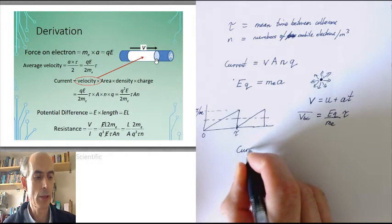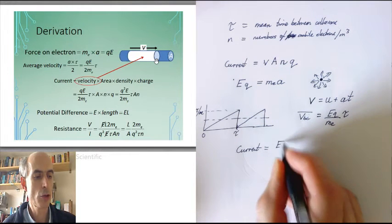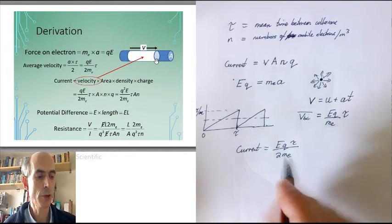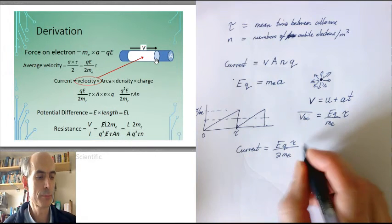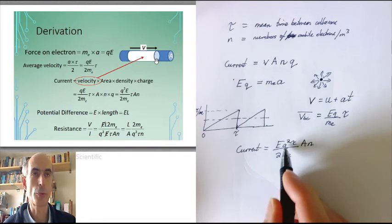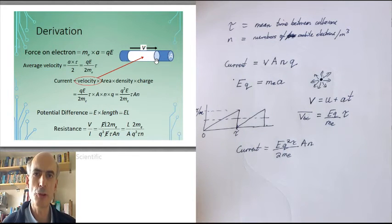So I could write the current equals Eq τ over 2m_e times Anq. That's a second q. I could write that as q squared here. Okay, that's the current.